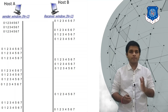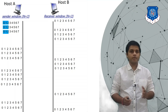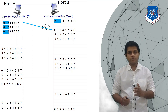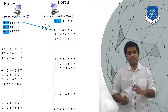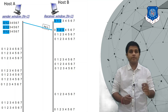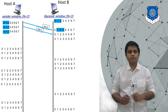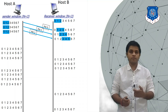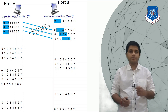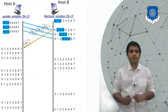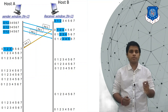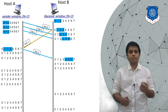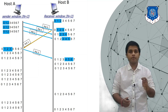Now let's consider a situation where an acknowledgement is lost in the channel. In Selective Repeat, the sender's window equals the receiver's window, both of size 3. A sends packet 0, B receives it and the window slides. A sends packet 1, B receives and the window slides. A sends packet 2, window slides. B sends ACK 1 for packet 0. As A receives ACK 1, the window slides and A sends packet 3. B receives packet 3, the window slides, and after some time A receives the next acknowledgement and the window slides.